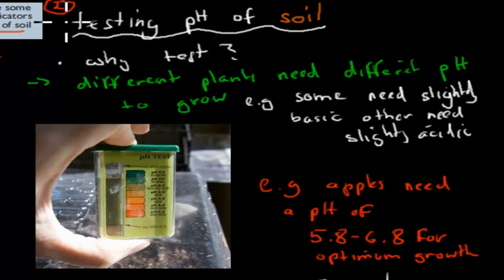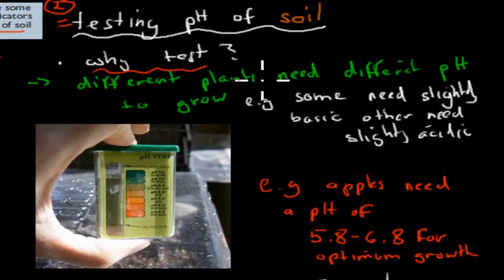Now the second example, everyday example was the testing of pH of our soil. Now why do we test? What's the reason why do we test our pH of the soil? The reason is because different plants need different pHs to grow. So different plants need different pHs to grow. For example, the example I gave is apples. So the pH of apples, the soil pH for apples if you want to have optimum growth should be around about 5.8 to 6.8. And if someone is doing biology they might remember the enzyme activity. All organisms have enzymes and each organism might have a different range for which these enzymes work best at.